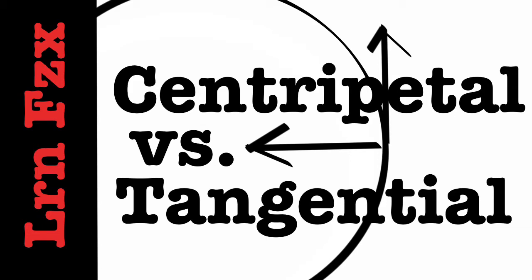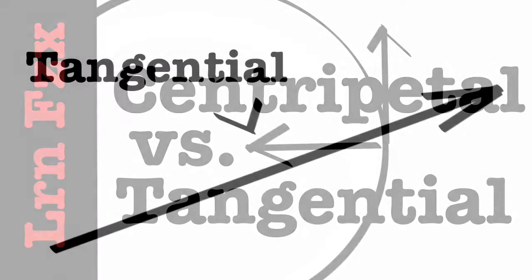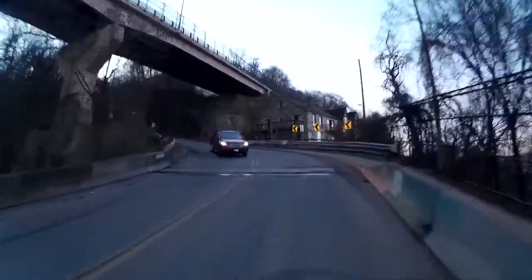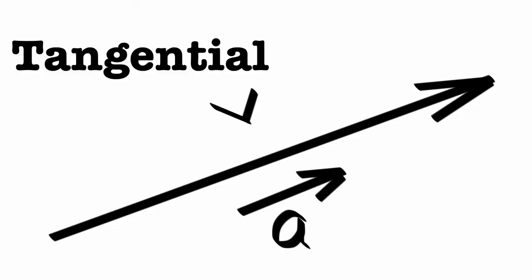Centripetal or tangential — let's learn physics. You're just driving along the road looking at your speedometer in a particular direction — that's your tangential velocity. The direction is straight ahead, parallel to your direction of motion.